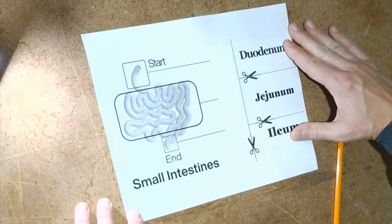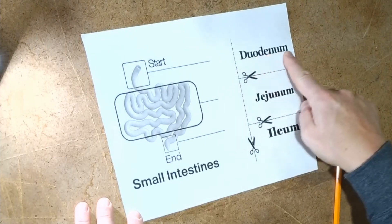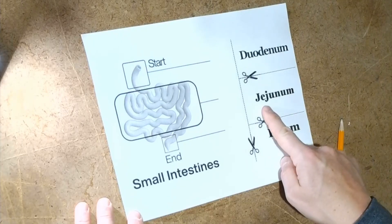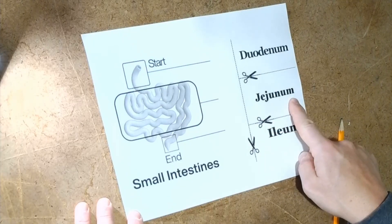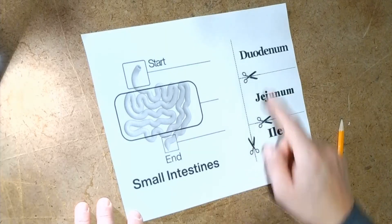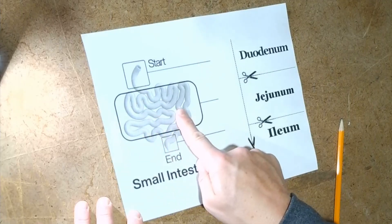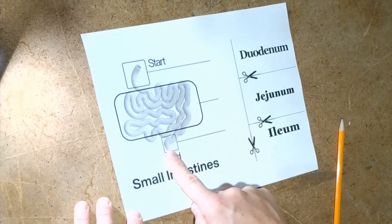And we have our three sections of the small intestines over here. We have our duodenum, jejunum, and ileum. And right now they are in order. They go duodenum being first, jejunum being second or the middle, and the ileum being the last one.